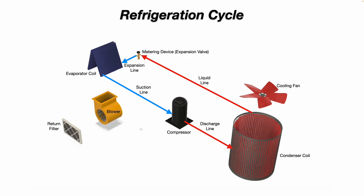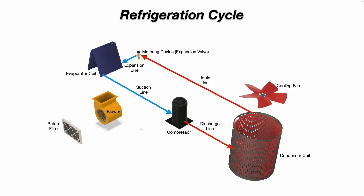As for how your indoor air actually gets cooled down: your ambient warm indoor air goes through the return filter into the blower. The blower blows that warm air through the evaporator coil, where the heat energy in the air molecules is given off to the refrigerant flowing through the evaporator coil. The refrigerant absorbs that heat energy — because by the law of thermodynamics, hot always goes to cold. That ambient air then becomes cool, leaves the evaporator coil, goes through your ductwork, and out your supply registers.